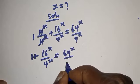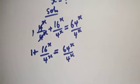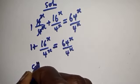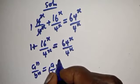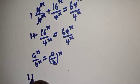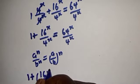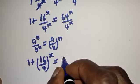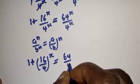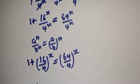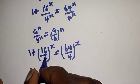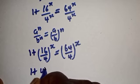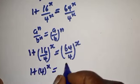Take note that if you have a raised to power n over b raised to power n, this is equal to (a over b) to the power n. So this becomes 1 plus (16 over 4) to the power of s is equal to (64 over 4) to the power of s. Then this is 1 plus 4 to the power of s is equal to 16 to the power of s.